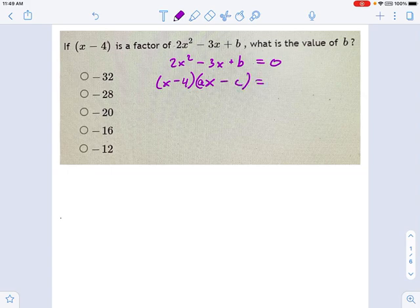Here, take a look at what I've done. I've rewritten this polynomial in some form like this, where there's that x minus 4 thing we were talking about, and there's this other factor, ax minus c.